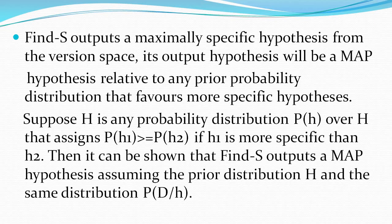To understand this, we already studied the Find-S algorithm. Using Find-S, we generally get the maximally specific hypothesis from the version space. It outputs a hypothesis which we can consider as the maximum a posteriori hypothesis whenever these assumptions hold, specifically when the prior distribution favors more specific hypotheses.